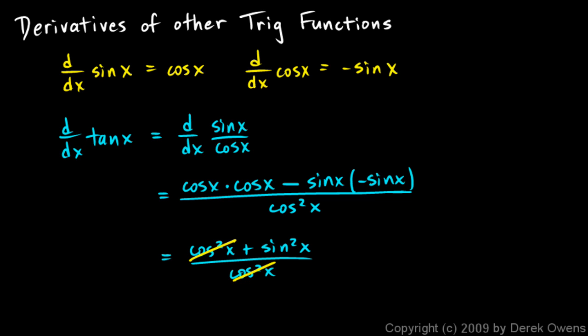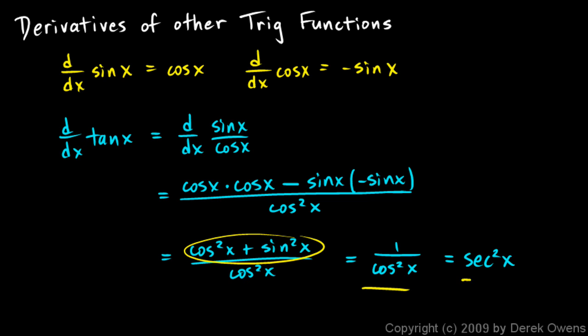Notice we have a minus negative, so the numerator becomes cosine squared x plus sine squared x over cosine squared x. Don't try to cancel those — we can only cancel factors, not terms separated by a plus sign. Cosine squared x plus sine squared x is the most important trig identity, and it equals 1. So this simplifies to 1 over cosine squared x, which is secant squared x. The derivative of the tangent function is secant squared x.